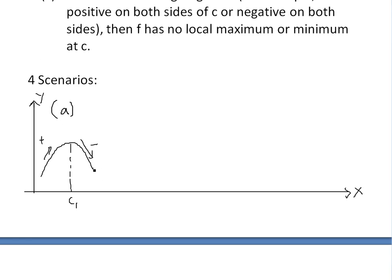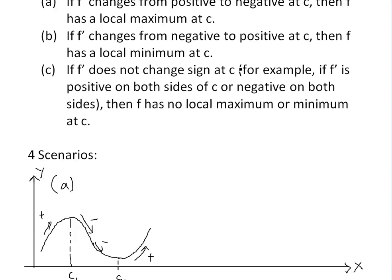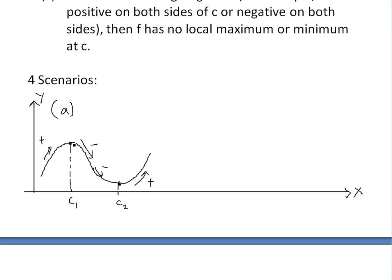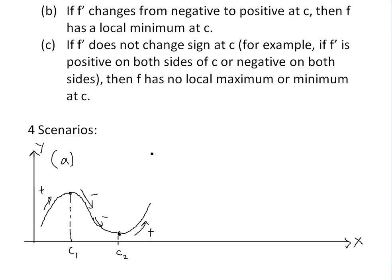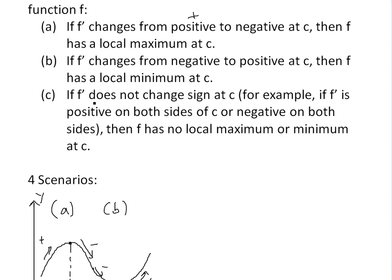The next case is when we're going downwards and then back upwards. At this point c2, the derivative is zero — it's a horizontal line — but here we're going from negative on the left to positive on the right, so we're going from negative to positive. This is a local minimum. You can see the definitions of local minimum and maximum in my earlier videos. This is case B.